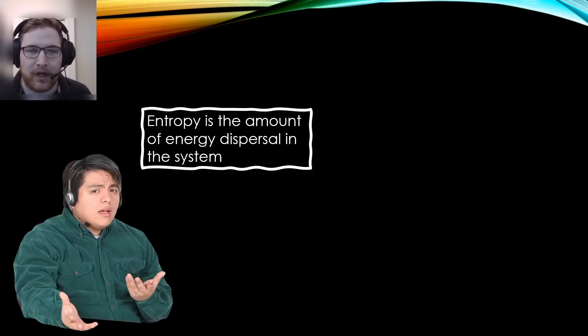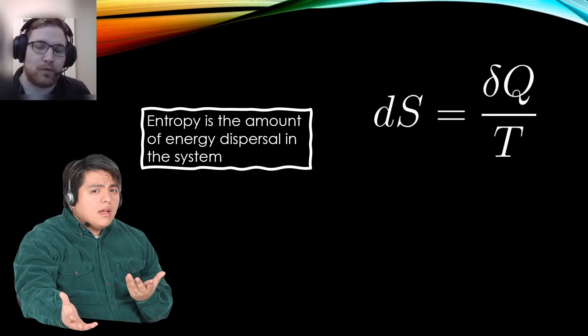Another interpretation one might find is that entropy is the amount of energy dispersal in the system. The more the energy is uniformly spread out in the system, the higher the entropy. People who attempt to explain entropy this way often cite the second law of thermodynamics, which states that for a reversible process, a small change in the entropy dS is a result of a small transfer of heat delta Q divided by the temperature. In a way, this is fine and is definitely consistent with what entropy is, so perhaps we're doing a lot better here.